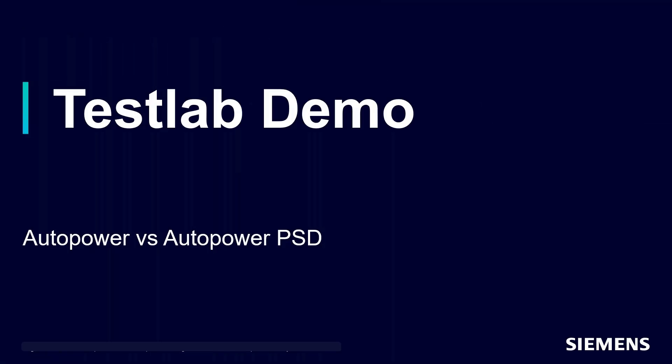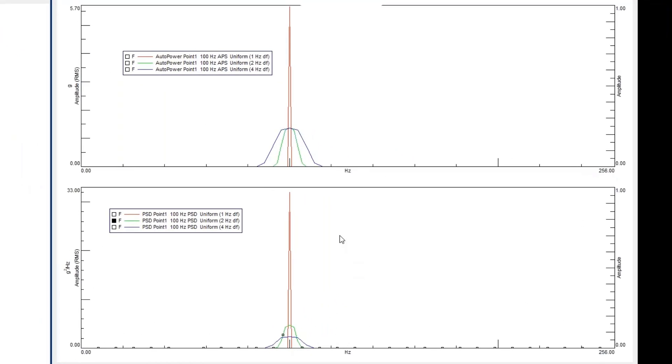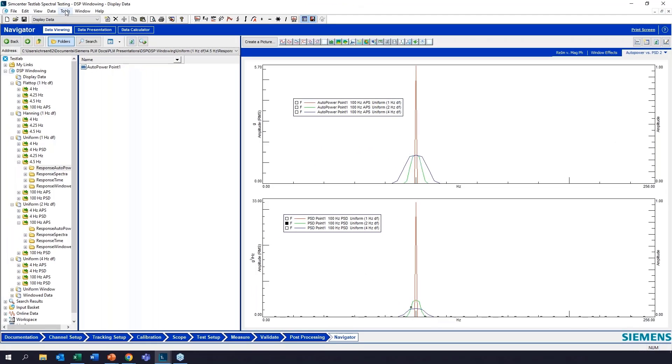We'll go into the software here and show how this works. These are auto power and PSDs of the same 100 hertz 8 volt or 8g signal. Keep in mind that this is scaled to RMS, so the amplitude doesn't look like 8, it's a little lower. You can see here how our auto power with different frequency resolutions versus our PSD with different frequency resolutions give you different answers, but we do have some tools in the software to correct for that.